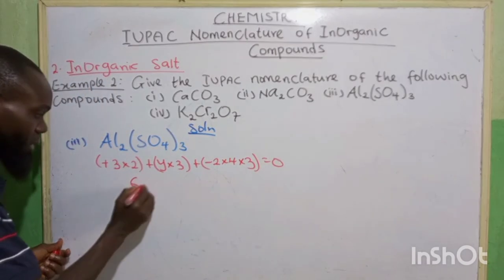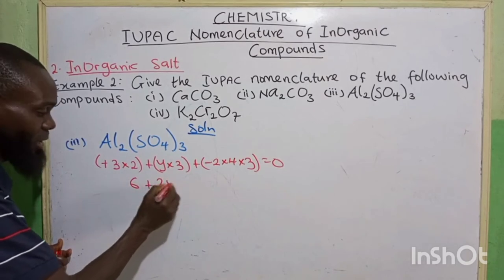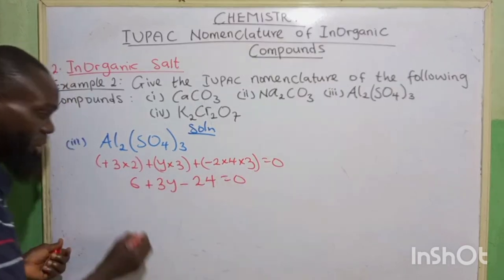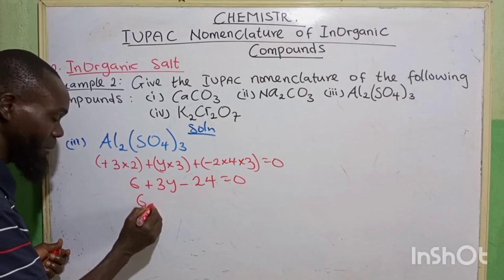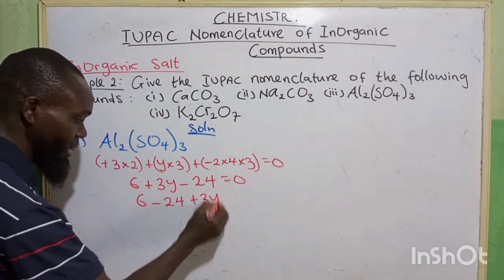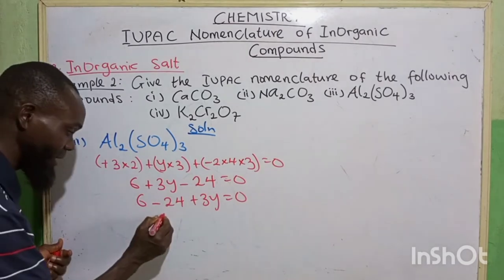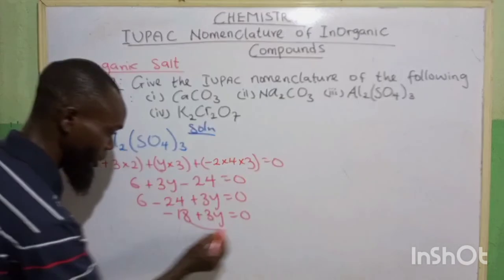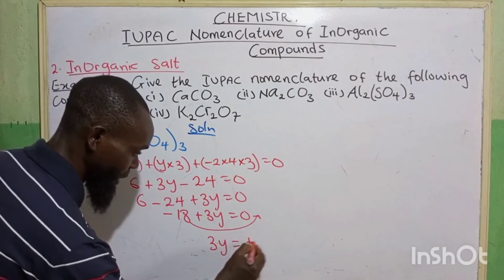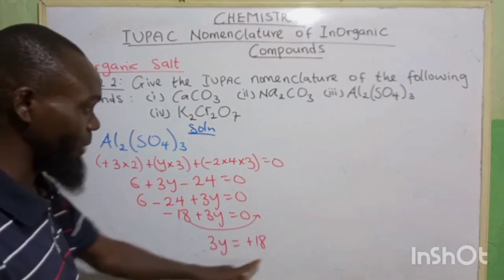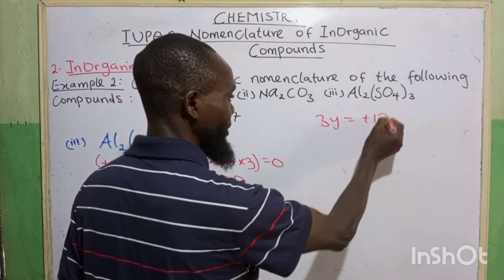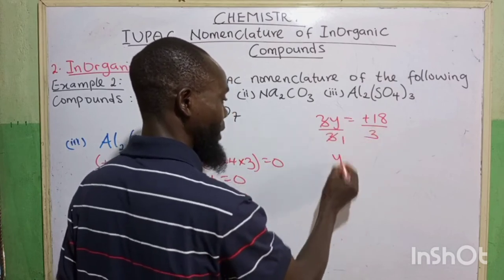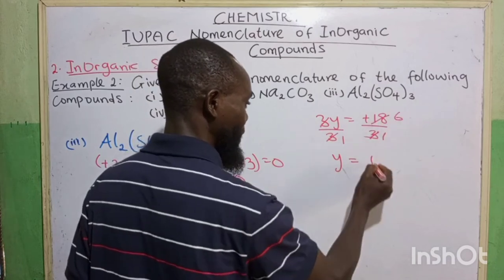Collecting like terms: 6 minus 24 plus 3Y equals 0, giving minus 18 plus 3Y equals 0. Taking unknown to the right: 3Y equals plus 18. Dividing both sides by 3: Y equals plus 6. So the oxidation number of sulfur in Al₂(SO₄)₃ is plus 6.